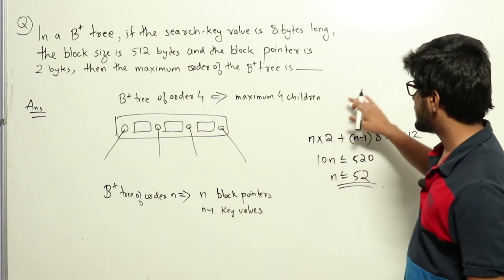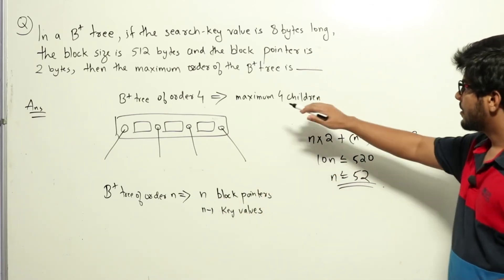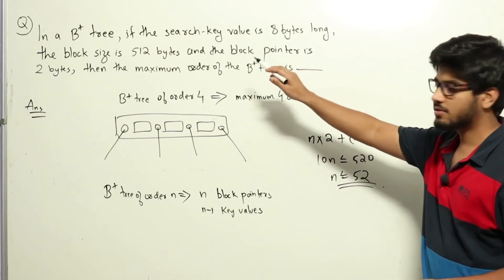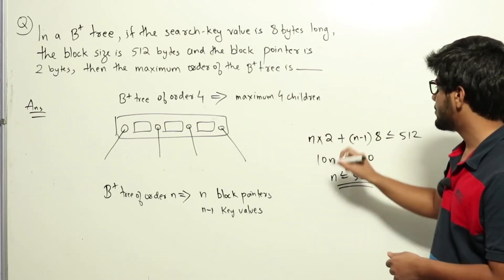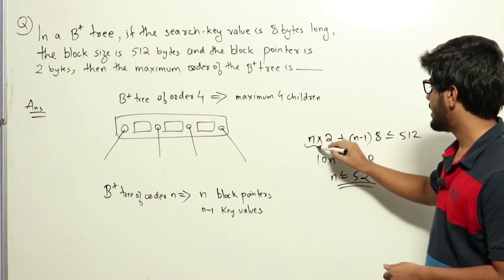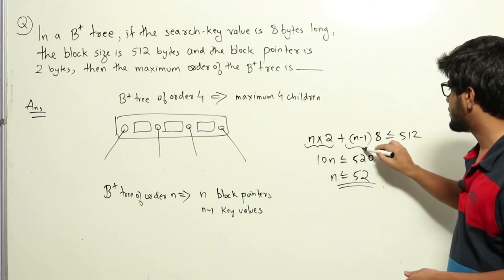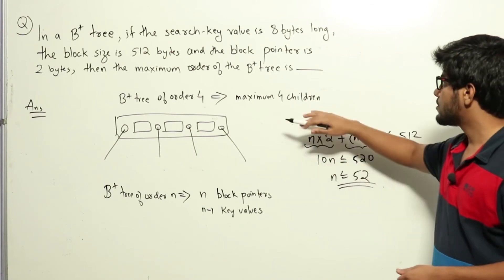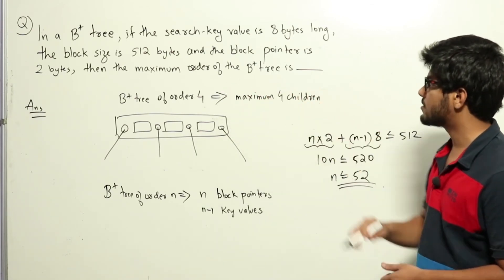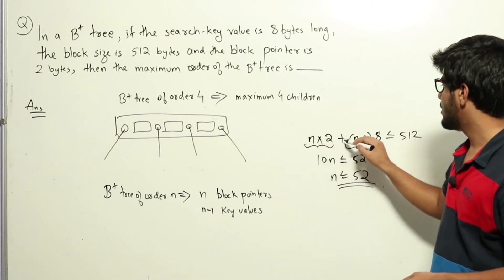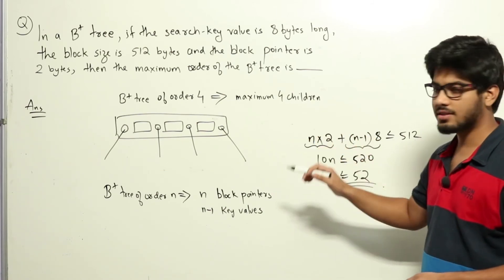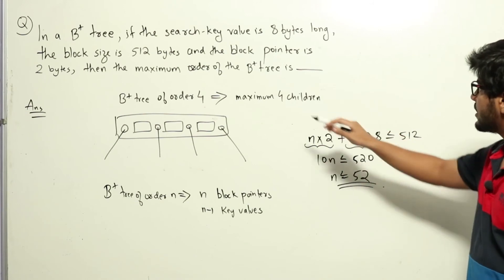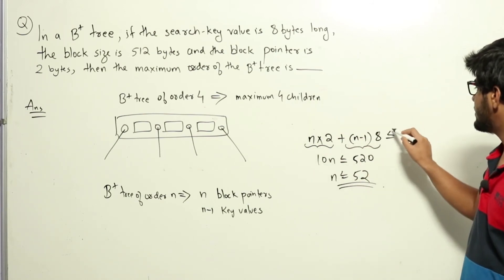Now let's look at the question. The block size is 512 bytes, which means for n block pointers and n minus 1 key values, the total size should be less than or equal to 512. Each block pointer has 2 bytes, meaning n × 2, plus there are n minus 1 keys: (n - 1) × 8 bytes ≤ 512.